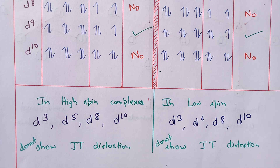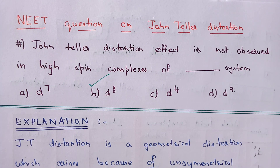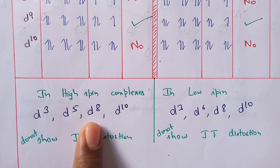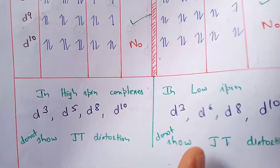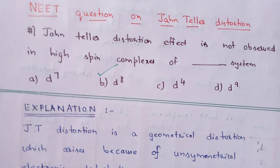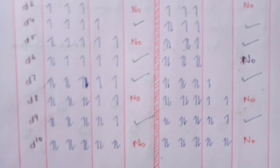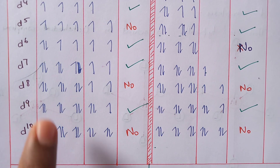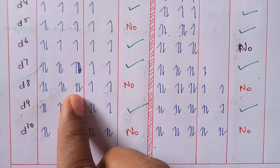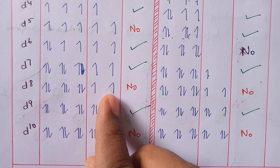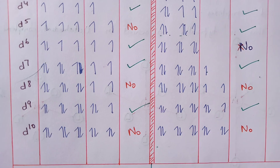The question asks: Jahn-Teller effect is not observed in high spin complexes of which system? In high spin complexes, the systems that do not show distortion are D3, D5, D8, and D10. Among the four given options, D8 is the answer. Why does D8 not show Jahn-Teller distortion? Because it has equal, symmetrical distribution of electrons — six electrons equally fill T2G, and EG has one electron in each orbital, equally filled. Therefore, no Jahn-Teller distortion in D8.